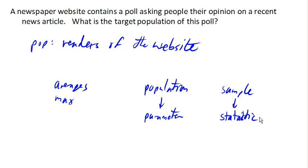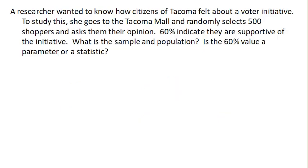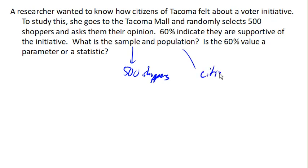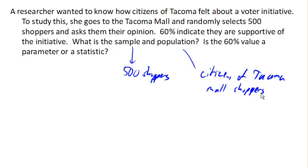Suppose a researcher wanted to know how citizens of Tacoma felt about a voter initiative, so they go to the Tacoma Mall and randomly select 500 shoppers and ask their opinion. 60% indicate that they're supportive. The sample here is the 500 shoppers. The population ideally is citizens of Tacoma, but more realistically it's probably mall shoppers, which may not be representative of the full population. The 60% value came from our sample, so it is a statistic, not a parameter, because that value comes from the sample.